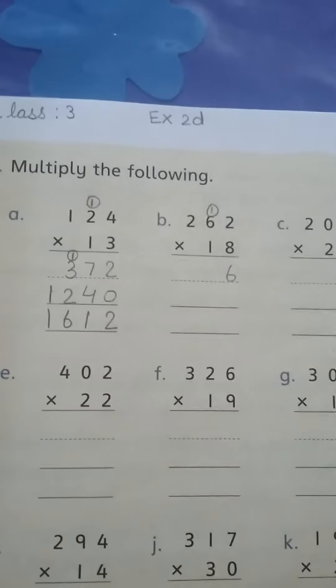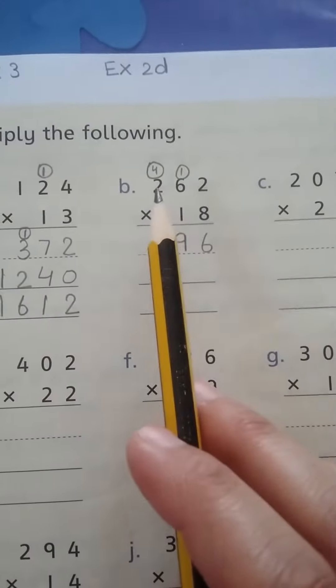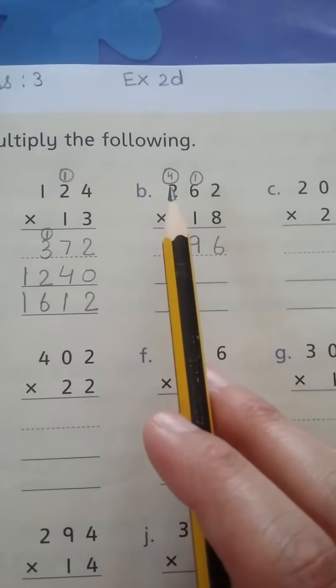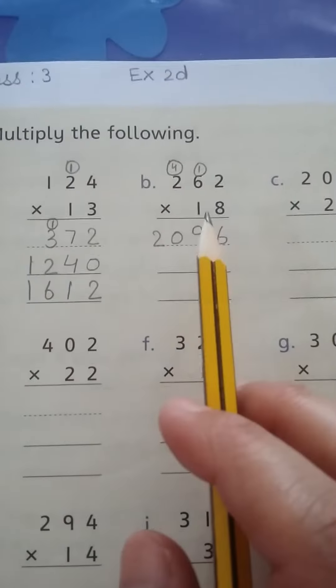Eight twos are 16, plus this four is 20. Now we will do this with tens.